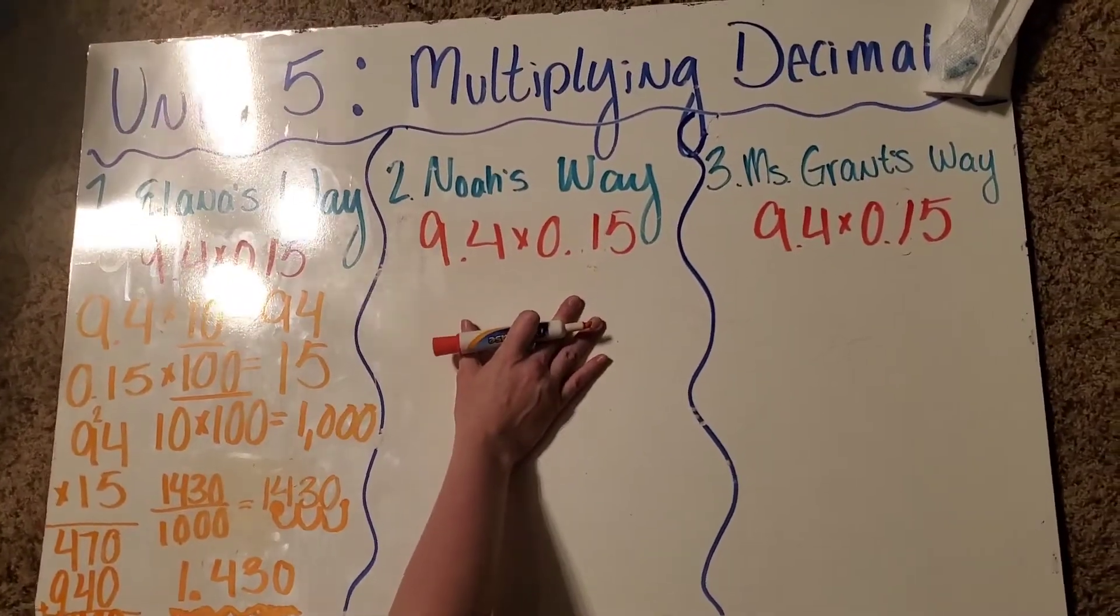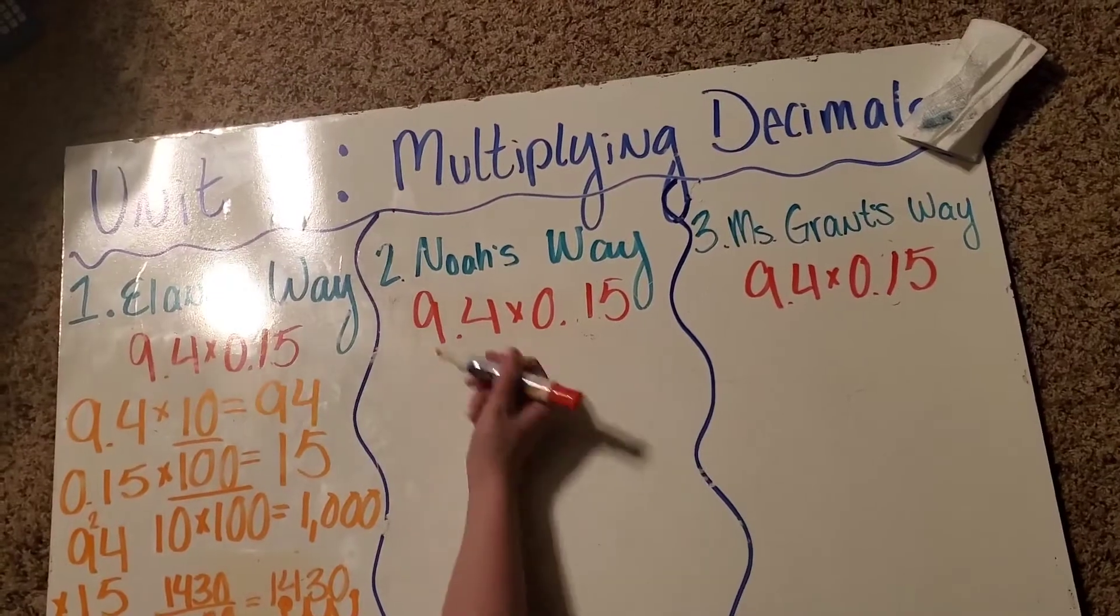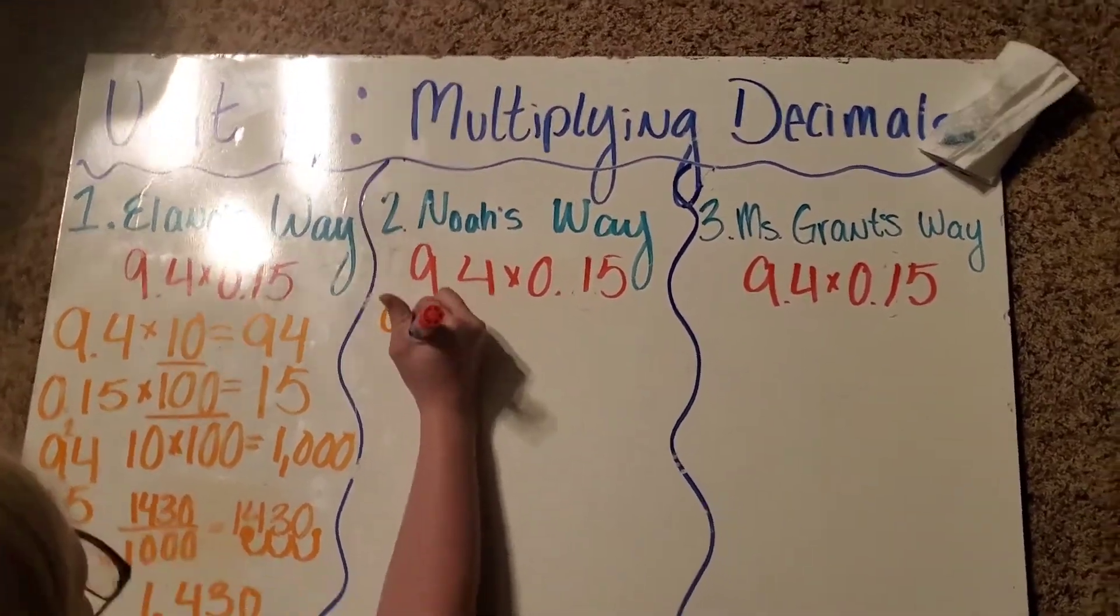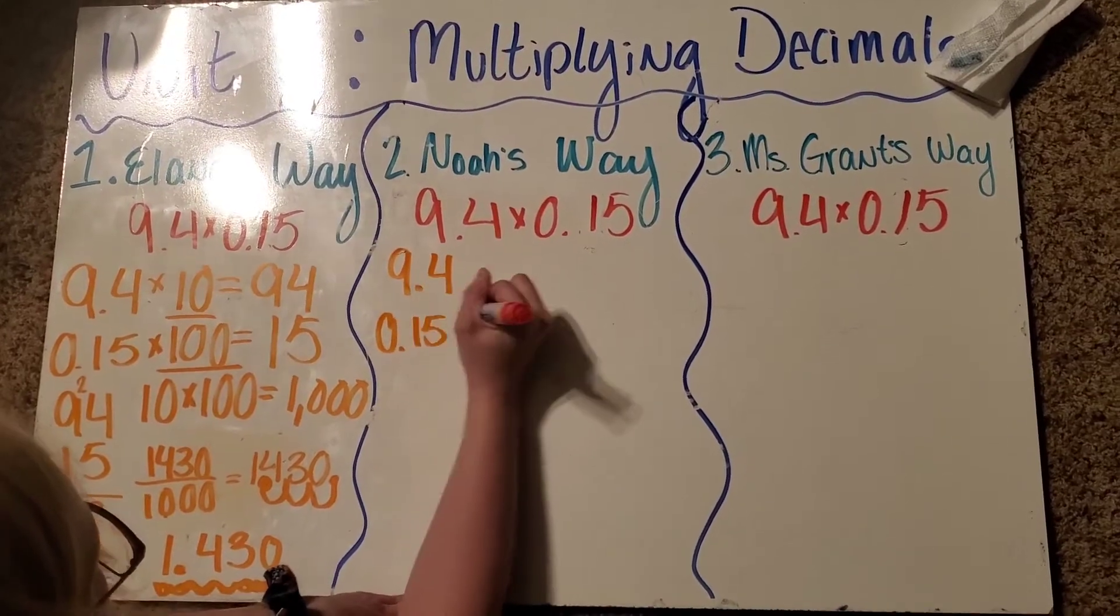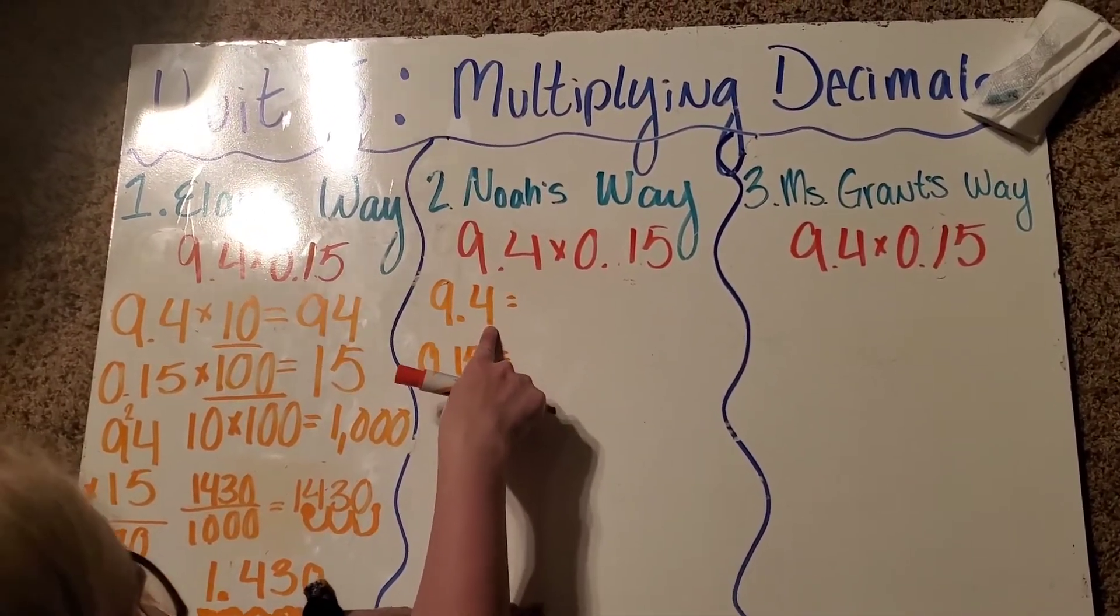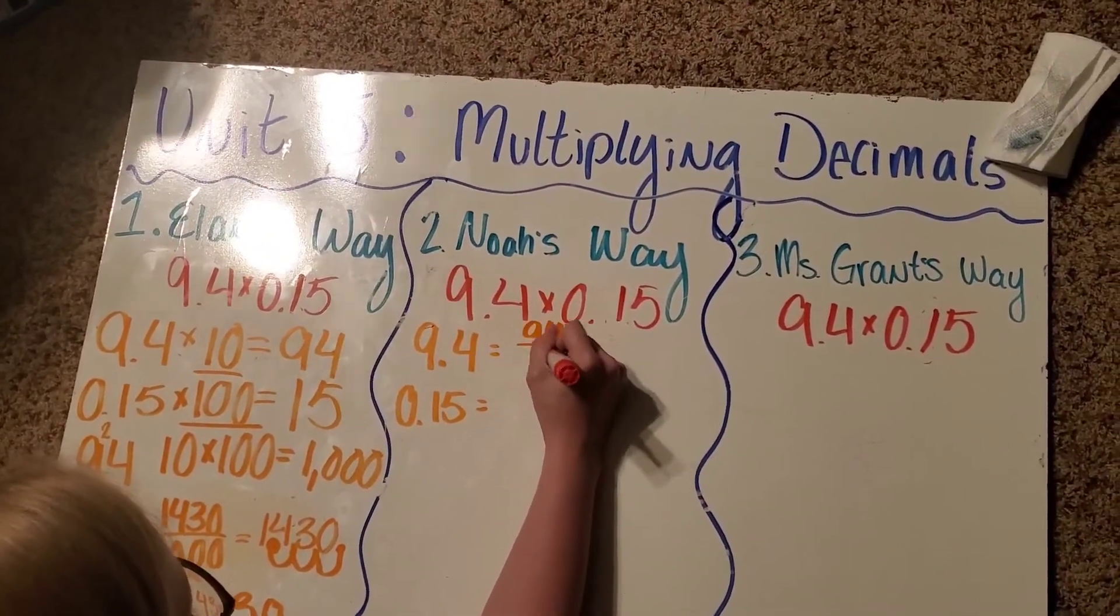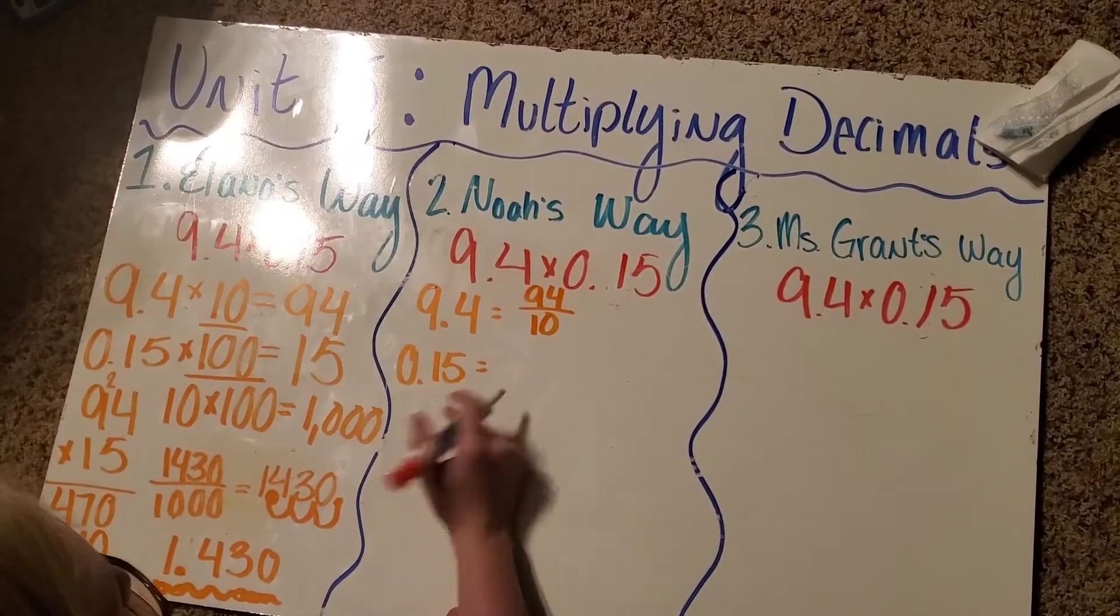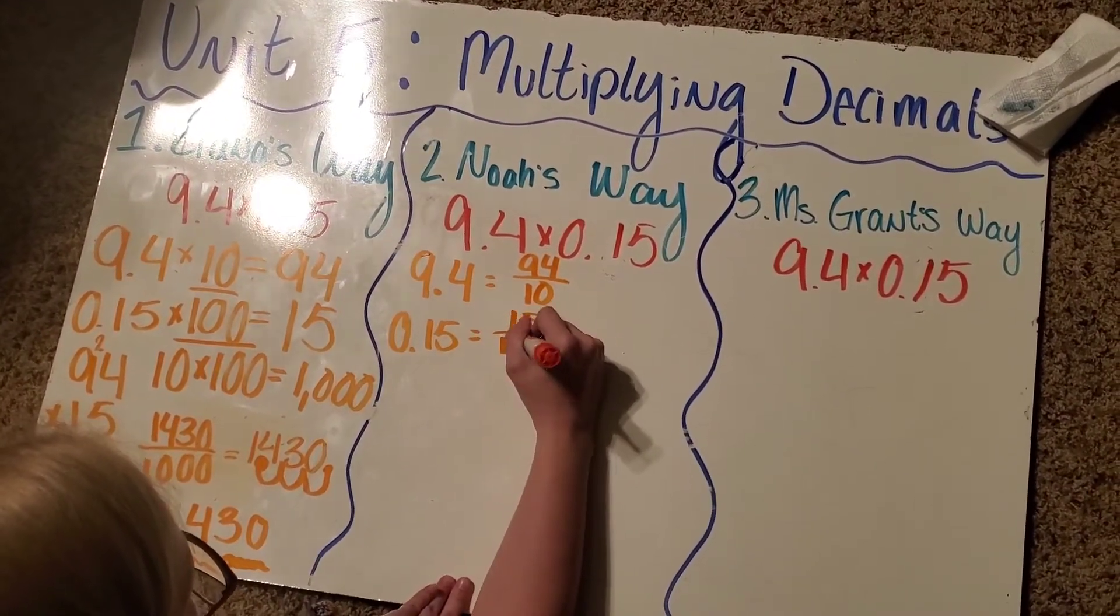So, same exact problem, 9 and 4 tenths times 15 hundredths, but we're doing it Noah's way. So, Noah turned decimals into fractions. So, this is 9 and 4 tenths. So, this is actually 94 over 10. And then, 15 hundredths becomes 15 over 100.